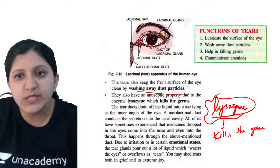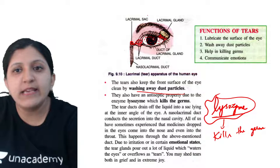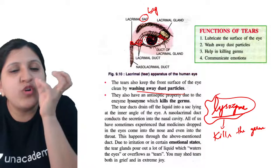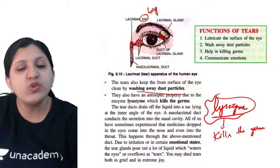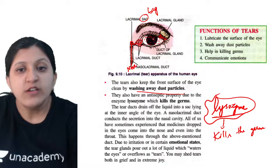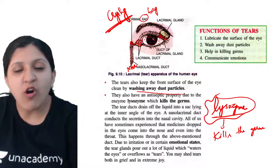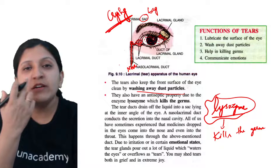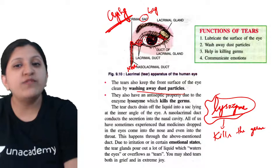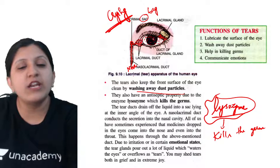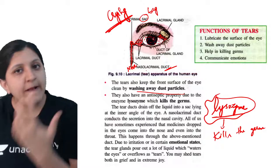The lacrimal sac stores some amount of tear. When it is full, the tear rolls down and enters your nose. Whenever you are crying or expressing joy through tears, you can find certain droplets coming out through your nose or throat. This is because the eye is connected to the nose through the lacrimal duct, and the nasolacrimal duct pours secretion - that is, tears - into the nose.